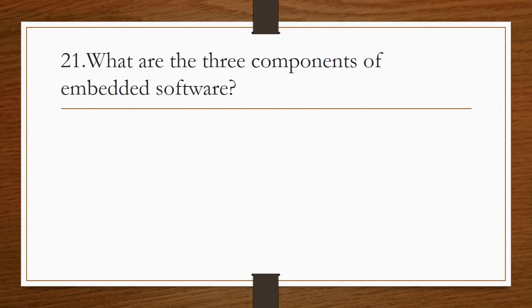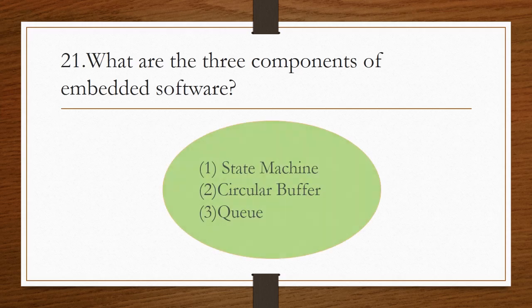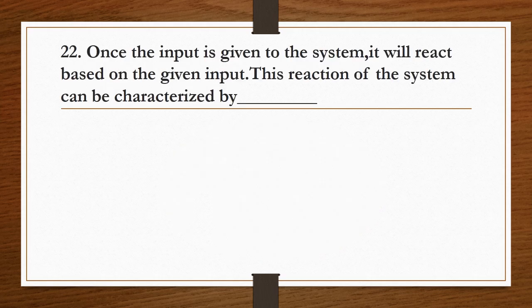What are the three components of embedded software? The three important components are state machine, circular buffer, and scheduler. Once the input is given to the system, it will react based on the given input, and this reaction of the system can be characterized by a state machine.